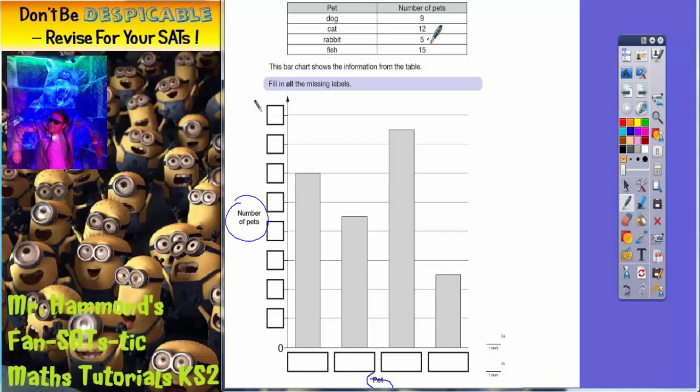Now the smallest or least most popular number of pets is rabbits with only five here, so that must go with the smallest bar. Now the smallest bar is this one, so this must be rabbits on five.